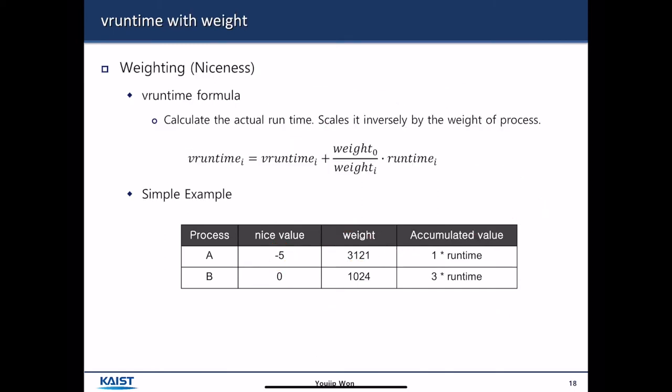Let us explain how the weight value affects the way the vruntime is obtained. First, it calculates the actual run time. And then, scales the actual run time inversely by the weight of the process. So if you have a higher weight, then your vruntime increases very slowly. This is the formula. The new vruntime is computed by the vruntime plus, originally was increased by runtime. However, if you have a weight, then your vruntime is scaled inversely with respect to your weight.